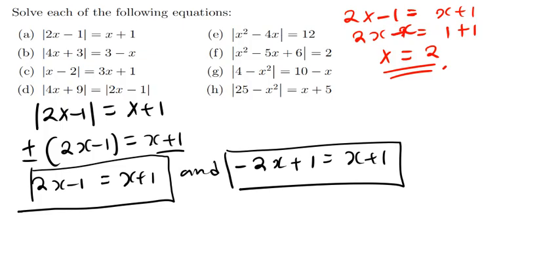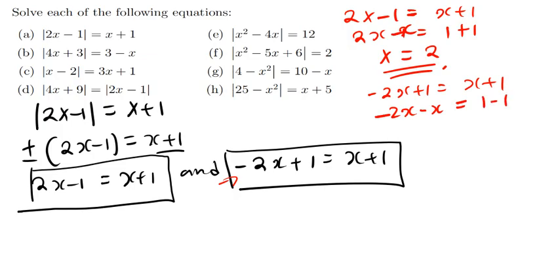Now the second equation: negative 2x plus 1 equals x plus 1. Shifting x to the other side: negative 2x minus x equals 1 minus 1, so negative 3x equals 0, therefore x equals 0.